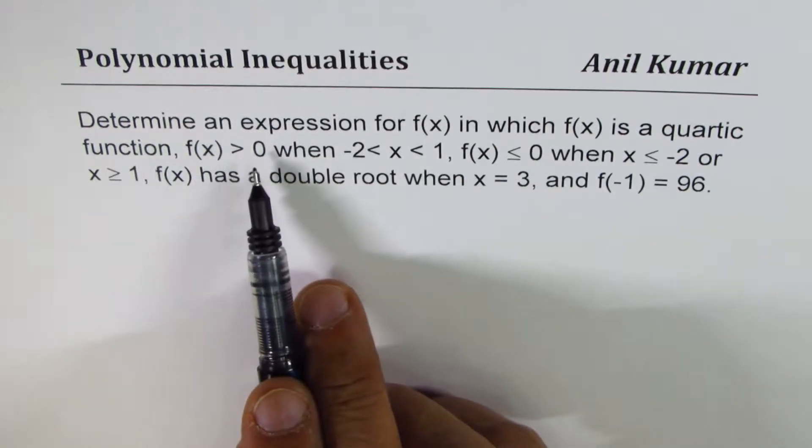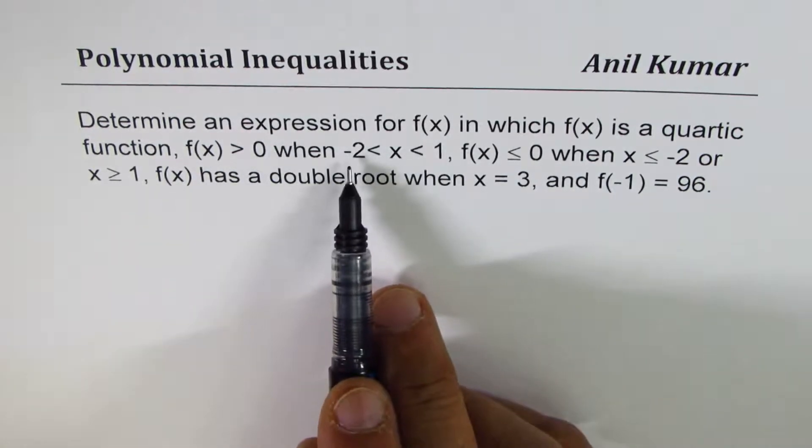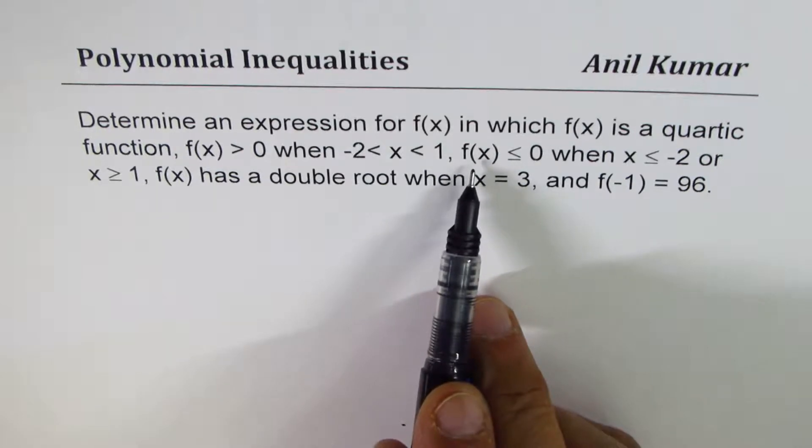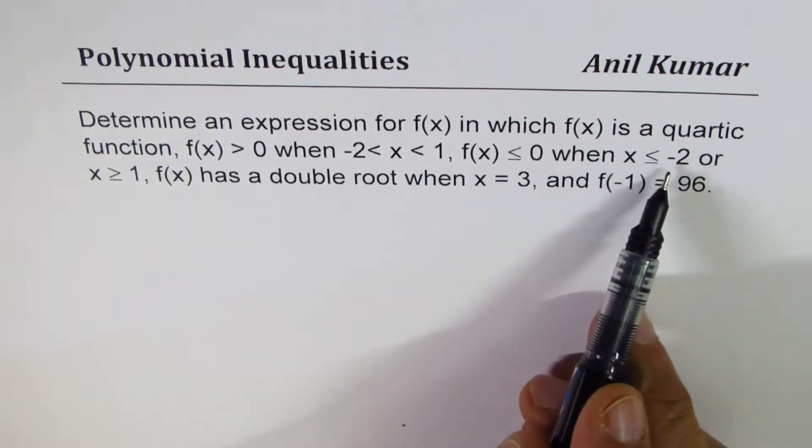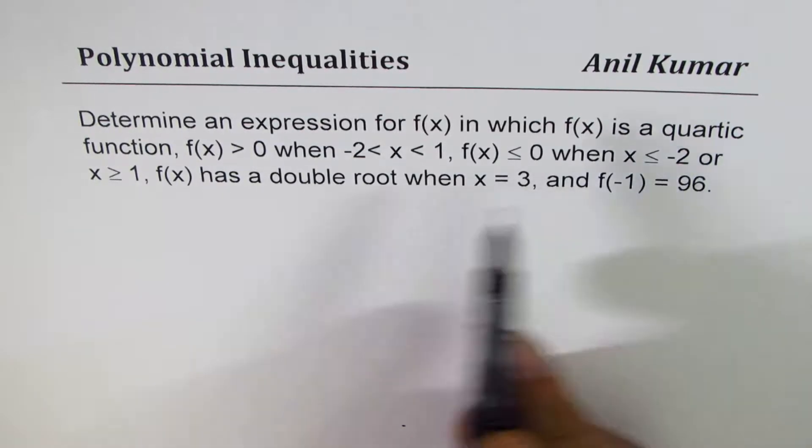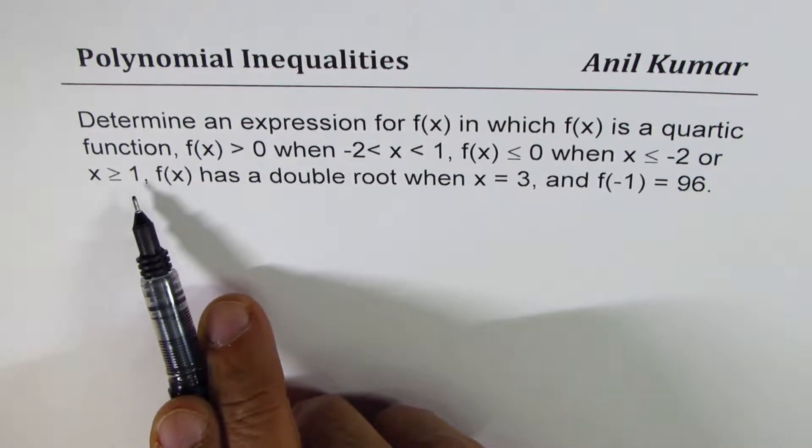f(x) is greater than 0 when x is between minus 2 and 1. f(x) is less than equal to 0 when x is less than minus 2 or x is greater than equal to 1.